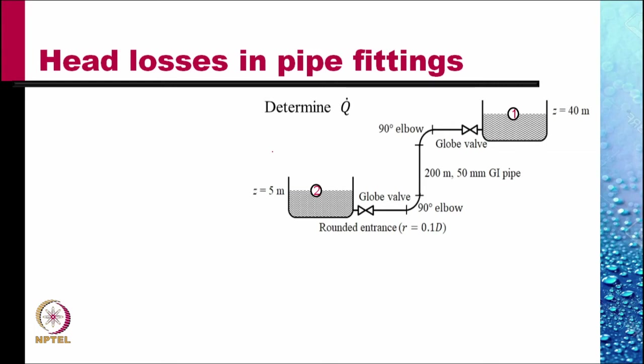There are two globe valves, two 90 degree elbows into the system. There is an entrance. The water is flowing from the higher reservoir into the lower reservoir and there is an exit. So, there will be two kinds of head losses. One because of friction in the pipe and the other the minor losses because of pipe fittings.